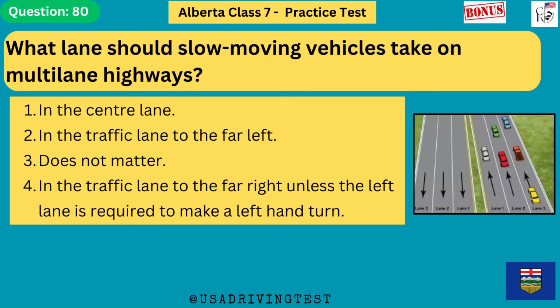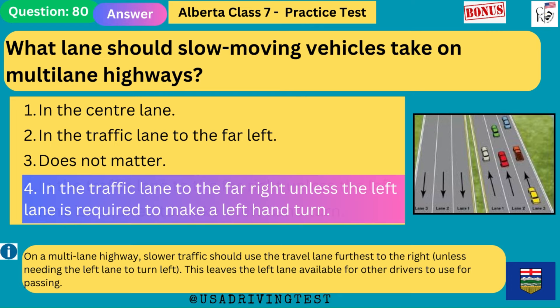What lane should slow-moving vehicles take on multi-lane highways? 1. In the center lane. 2. In the traffic lane to the far left. 3. Does not matter. 4. In the traffic lane to the far right unless the left lane is required to make a left-hand turn. The answer is 4. On a multi-lane highway, slower traffic should use the travel lane furthest to the right, unless needing the left lane to turn left. This leaves the left lane available for other drivers to use for passing.